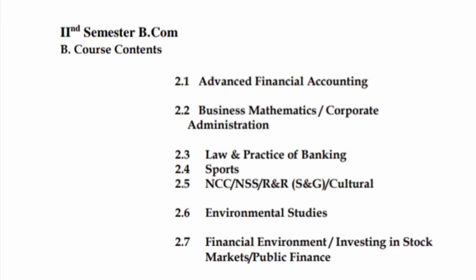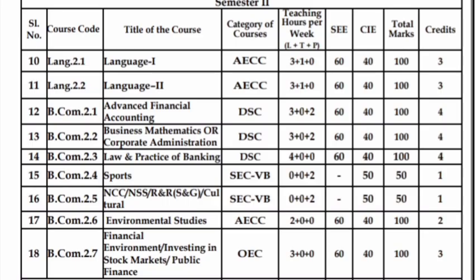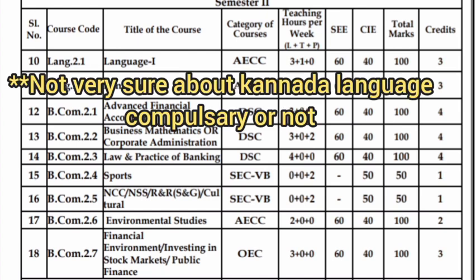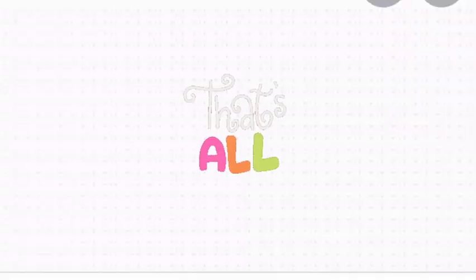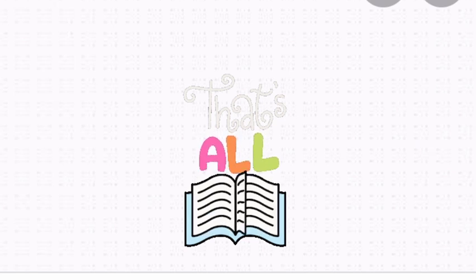These are the Second Semester subjects: Advanced Financial Accounting, Business Mathematics or Corporate Administration, and Law and Practice of Banking. Then Sports, NCC, and NSS activities are included — these are 50 marks each with only internals, no semester examination, similar to First Semester Yoga and Health and Wellness. There is also Environmental Studies and one Open Elective with three options. The marks structure is the same — 40 marks internal assessment and 60 marks for semester examinations. Kannada is compulsory as a language in the second semester as well.